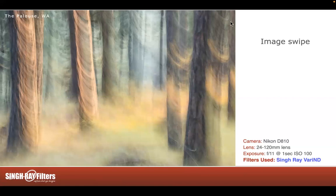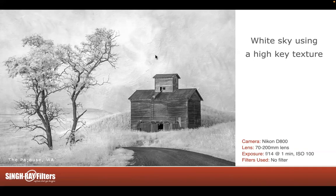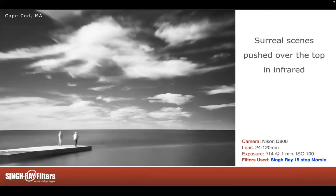I used to hate white skies, and now I use them. I have a pure white sky here and I wanted to add a texture. The texture had color, so I desaturated it just to put texture in the white sky — like a plaster look, just like painting. You get the white sky with detail from the texture, and everything else is fine. Really fun shot in the Palouse. My favorite barn, actually.